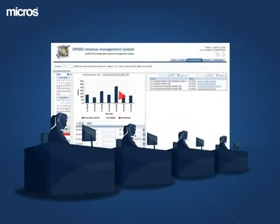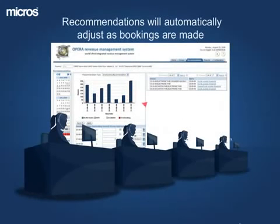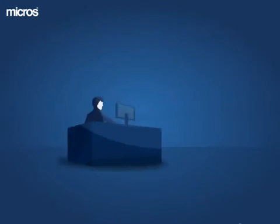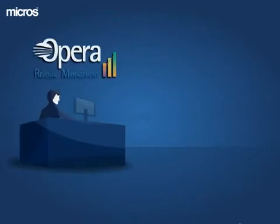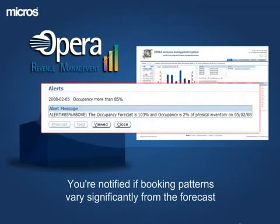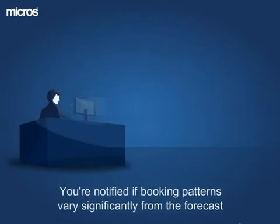And with real-time responsiveness, the recommendations will automatically adjust as bookings are made. The revenue manager can even set alerts in ORMS, so he's notified if booking patterns vary significantly from the forecast, or if price recommendations deviate from an anticipated range.